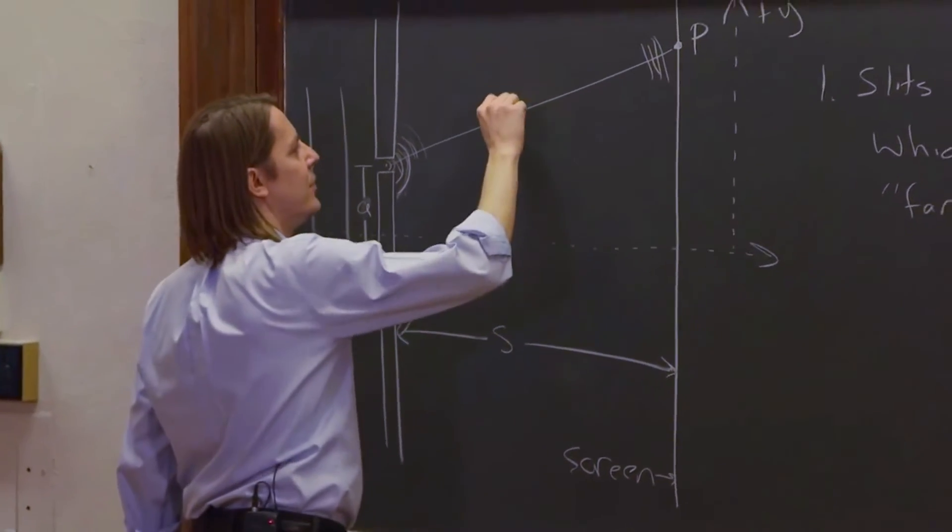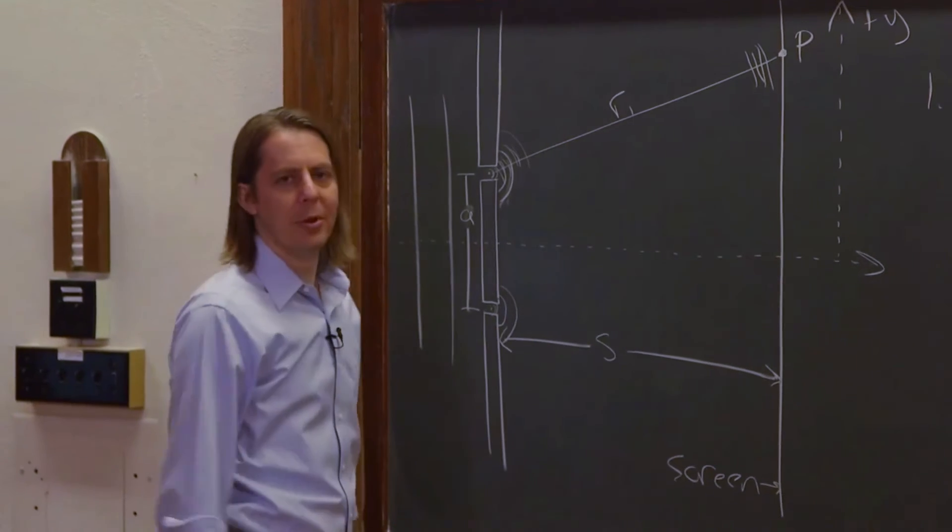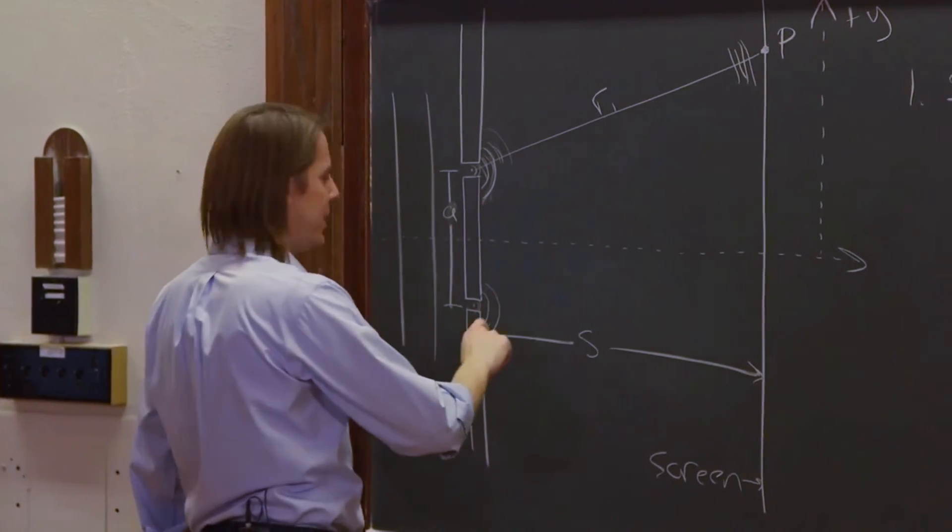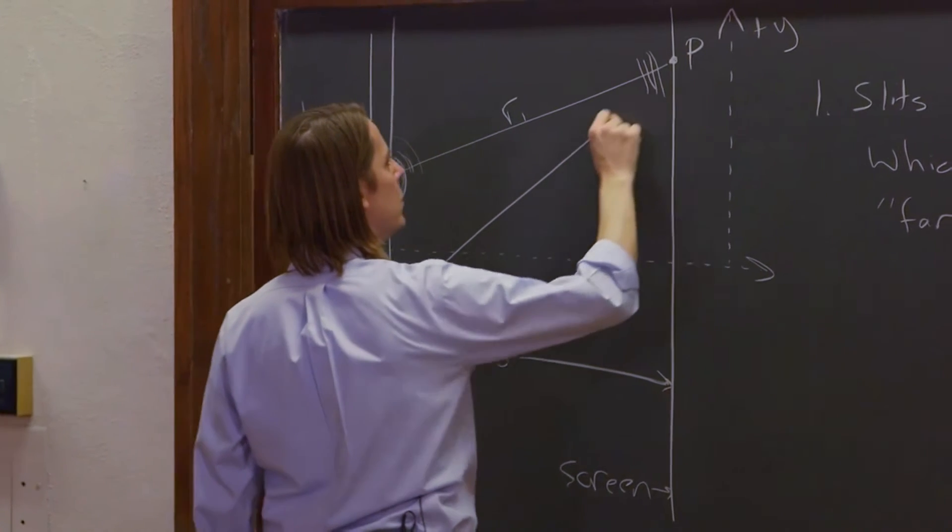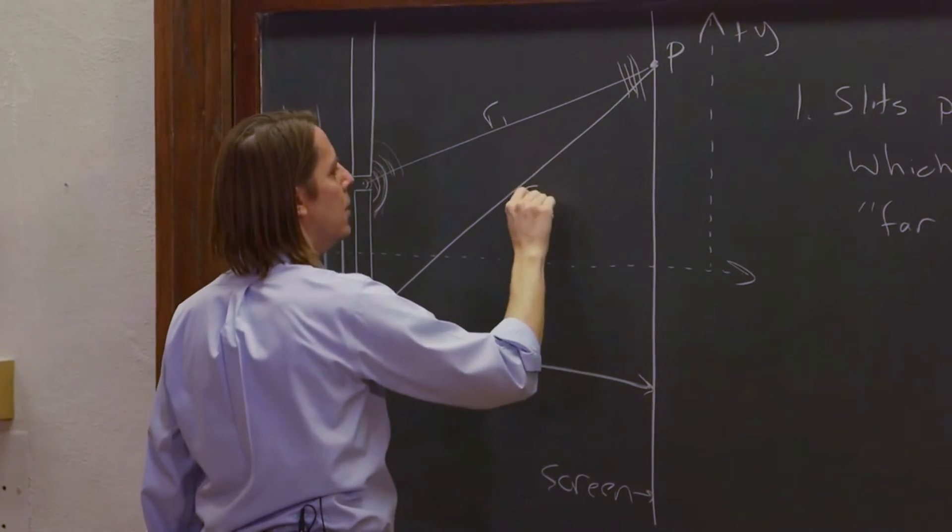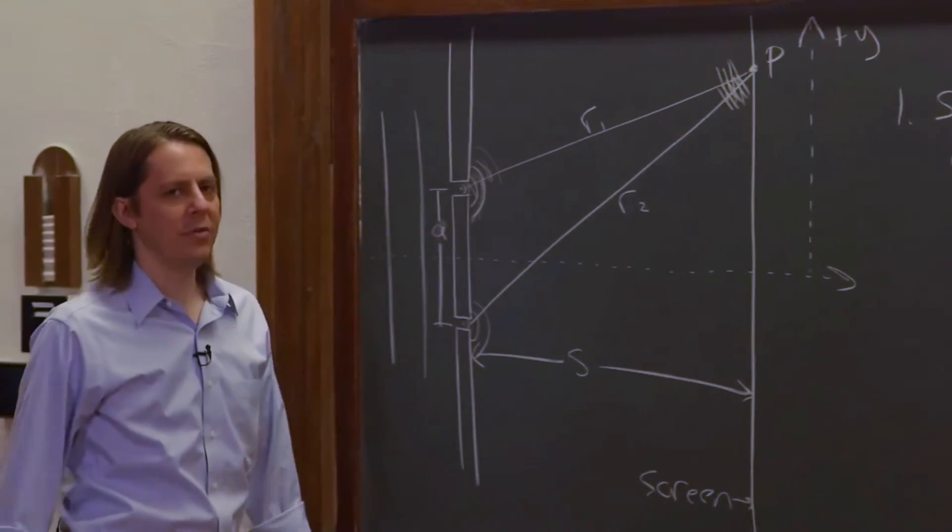Or you could say, if we're going to define this as slit 1, that's R1, you could say if R1 is bigger than lambda. Same thing is going to happen here. So if I now draw a line from slit 2 to P, that's R2, it's going to make a plane wave headed to P.